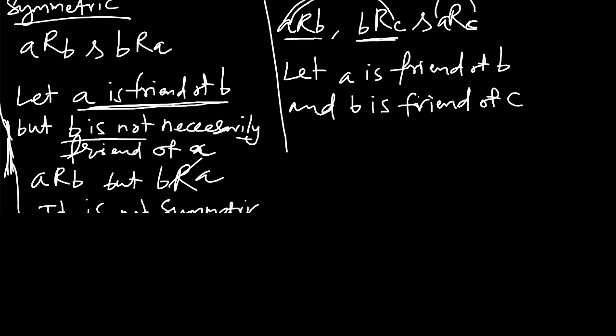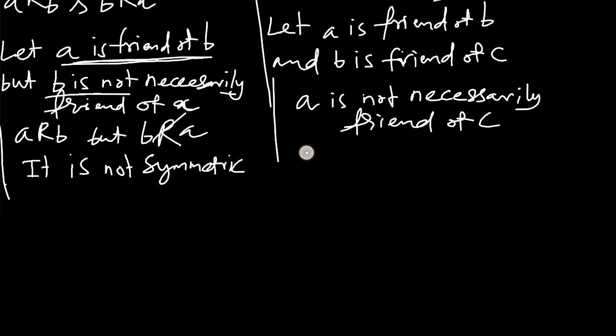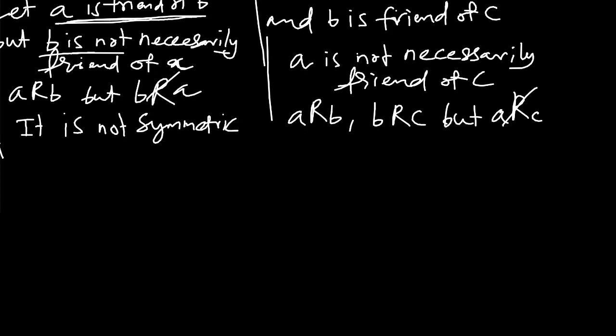But A may or may not be friend of C. So A is not necessarily friend of C. Now, A related to B of course, and B related to C, but A related to C is not true. Therefore, it is not transitive.